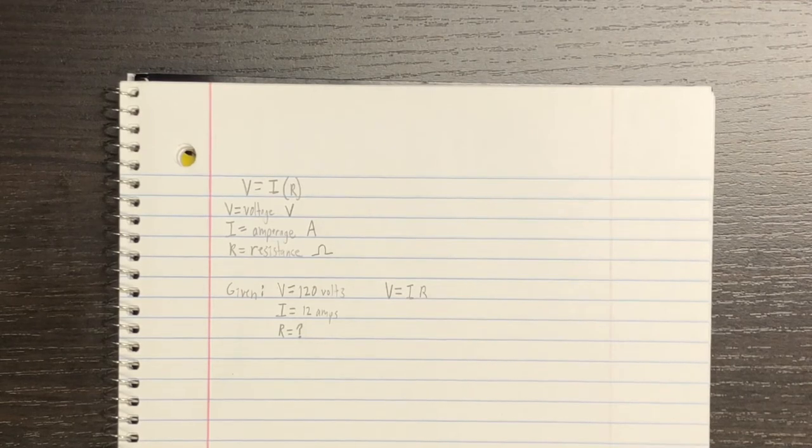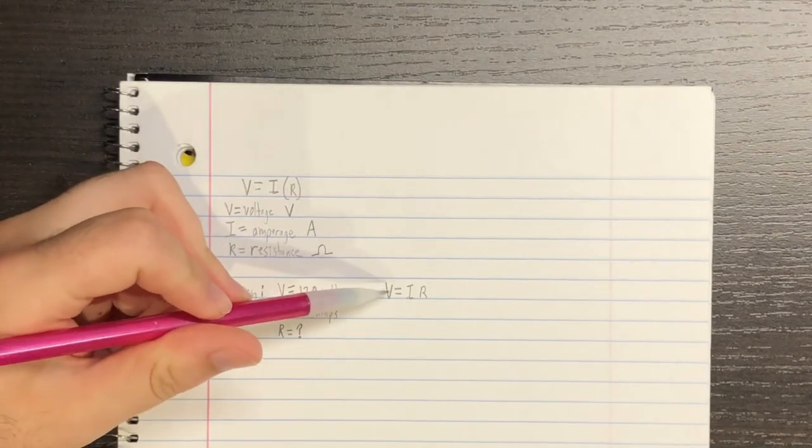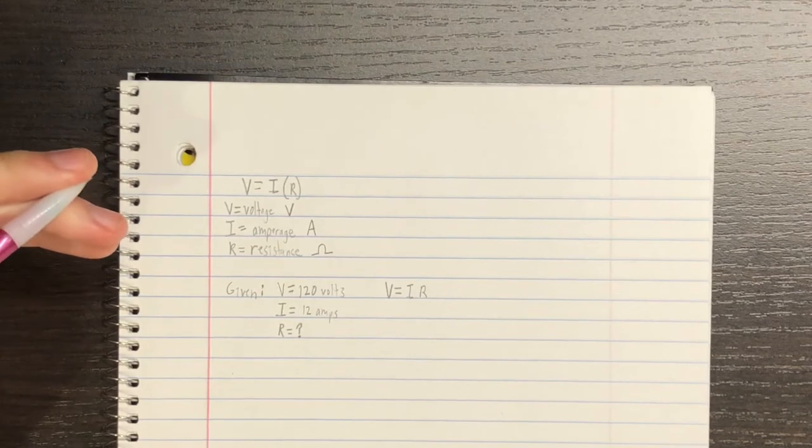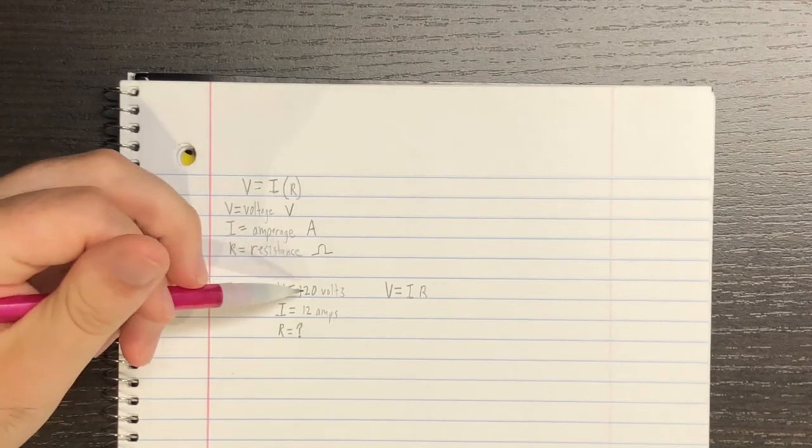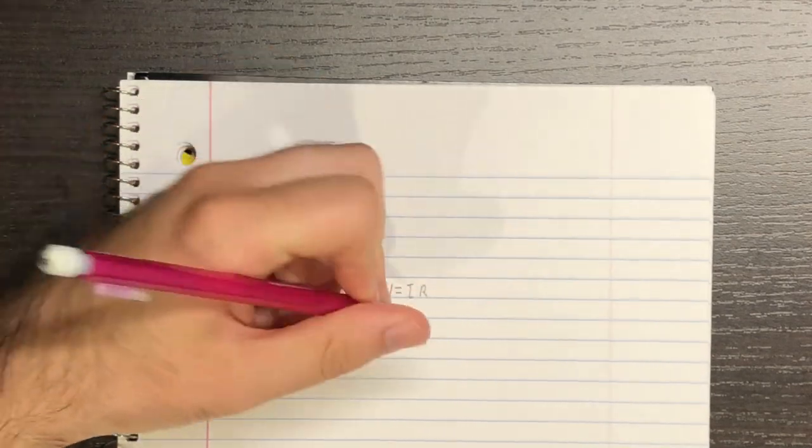Well, we can find the resistance of the space heater using Ohm's Law, which I wrote off to the side here. V is equal to I times R. So, now let's start filling in these variables with our given information. We know V is equal to 120 volts, and that's in the correct units.